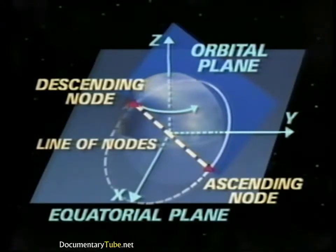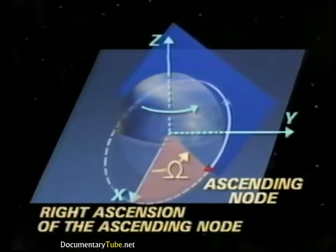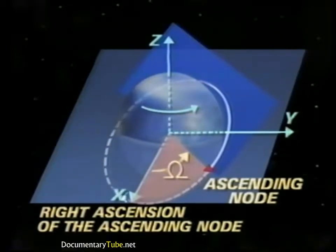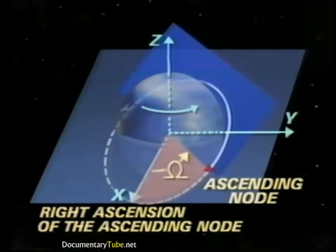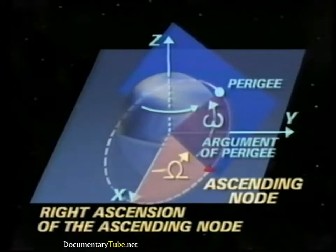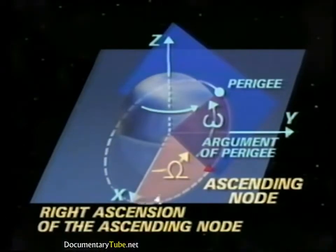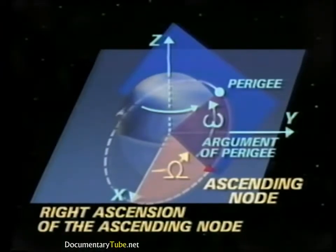The orientation of an orbit is determined by three orbital element angles. The right ascension of the ascending node is the angle between the X axis and the ascending node, always measured eastward from the direction of the vernal equinox in the Earth's equatorial plane. The argument of perigee is the angle between the ascending node and the point of perigee, measured in the orbital plane in the direction of spacecraft motion.